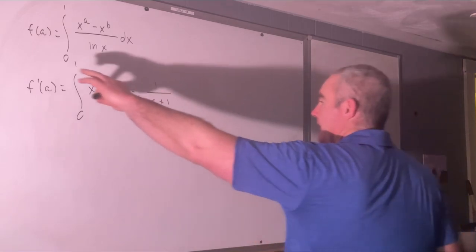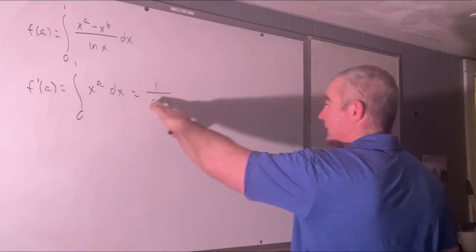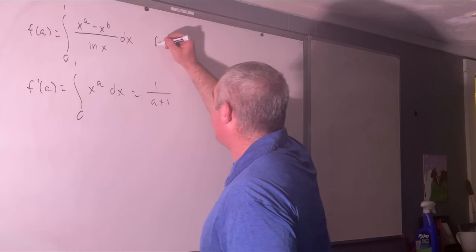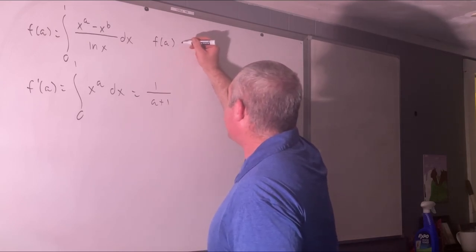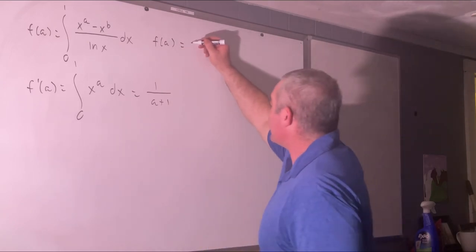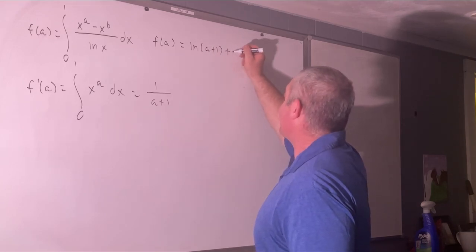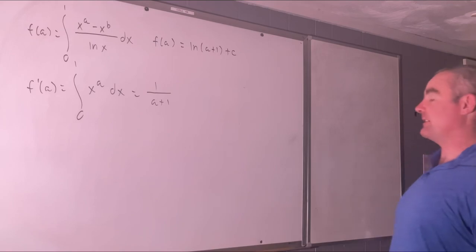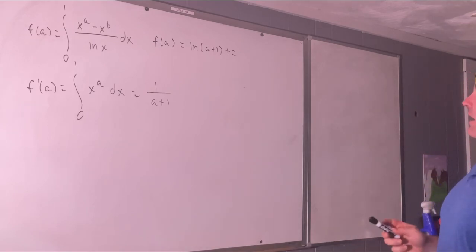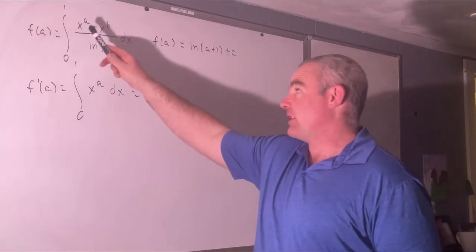Well, if this is f prime of a then we can see that f of a is going to be equal to the natural log of a plus 1 plus c. Notice that I did not put that in absolute values. That's because there are very few restrictions on a and b.